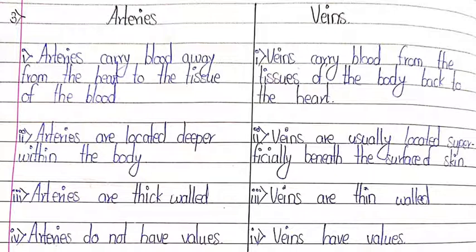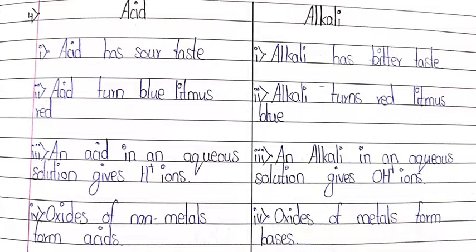Arteries and veins. First: arteries carry blood away from the heart to the tissues of the body; veins carry blood from the tissues back to the heart. Second: arteries are located deeper within the body; veins are usually located superficially beneath the surface of the skin. Third: arteries are thick-walled; veins are thin-walled. Fourth: arteries do not have valves; veins have valves. Difference between acid and alkali: acid has a sour taste; alkali has a bitter taste. Acid turns blue litmus red; alkali turns red litmus blue. An acid in aqueous solution gives H+ ions; an alkali in aqueous solution gives OH- ions. Oxides of non-metals form acids; oxides of metals form bases.